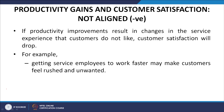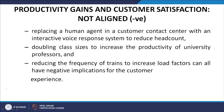If productivity improvement results in changes in the service experience that customers do not like, customer satisfaction will drop. Productivity improvement should be something customers like, otherwise it leads to reduced customer satisfaction. For example, getting service employees to work faster may make customers feel rushed and unwanted. Replacing a human agent in a customer contact center with an interactive voice response system reduces head count and increases productivity, but can hurt satisfaction. Doubling class sizes or reducing train frequency can also have negative implications for the customer experience.